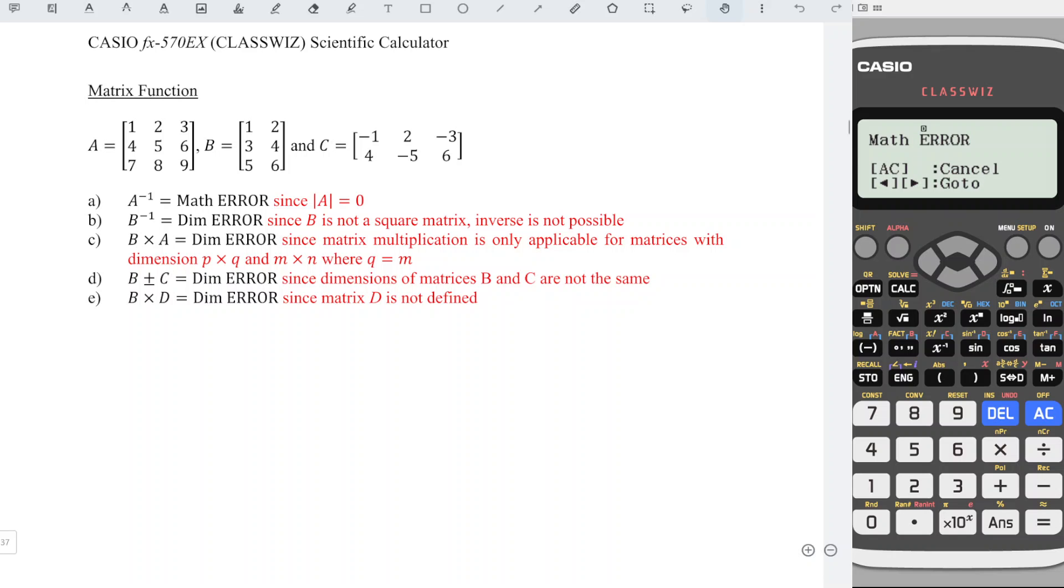This is because the determinant of matrix A is equal to 0. We have to bear in mind that the inverse equals 1 over determinant times adjoint. Since 1 over 0 is undefined, that's why we obtain math error.